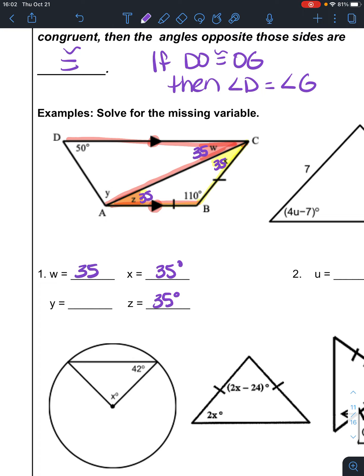The theorem says that if lines are parallel, then alternate interior angles are congruent. That means W is also 35. From there I can use triangle DAC. The angles of a triangle add up to 180, so 35 plus 50, subtract that from 180, and you find out that angle Y, or the angle at DAC, is 95.